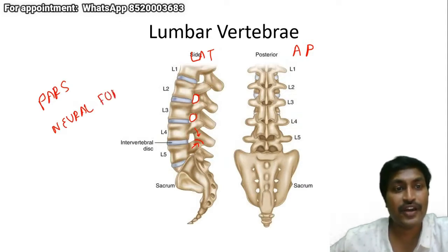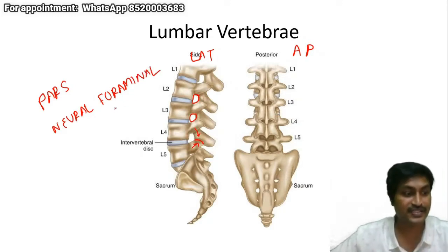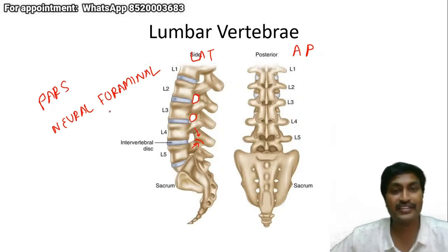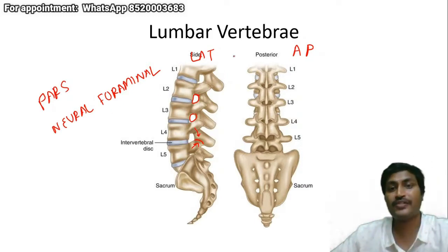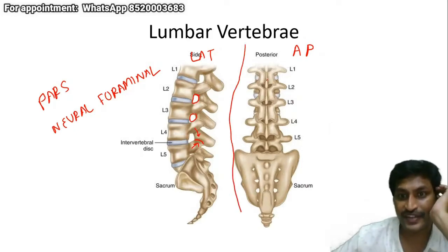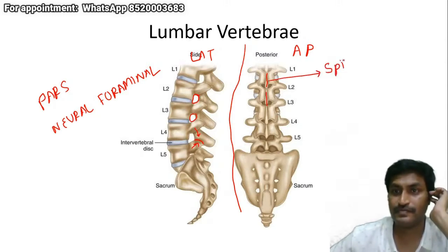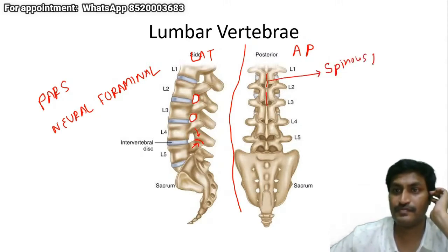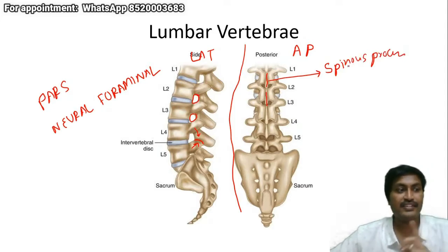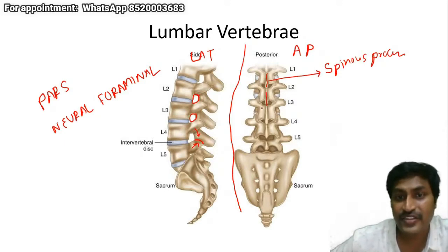All the structures which I'm telling you have a radiological implication, and you will see in the next portion. Unless you identify in these pictures, you will not be able to identify in the MRI pictures also. Now coming to the AP view — in the AP view there are a few structures you will have to identify. One is this structure which is seen in the midline. What is this? This is the spinous process, exactly in the midline.